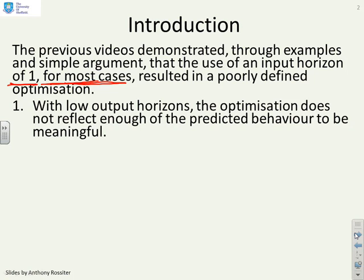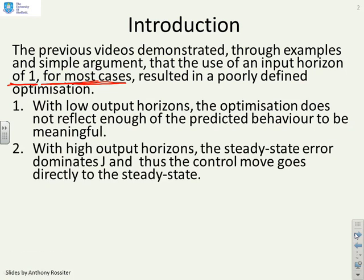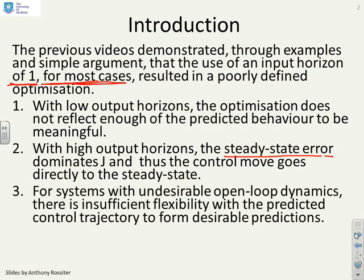If you had low output horizons, the optimisation does not reflect enough of the predicted behaviour to be meaningful. And if you had high output horizons, the steady state error dominates the performance index, and thus the control move goes directly to the steady state. If you've got systems with undesirable open loop dynamics, then with nu equals 1, there is insufficient flexibility within the control trajectory to form desirable predictions.